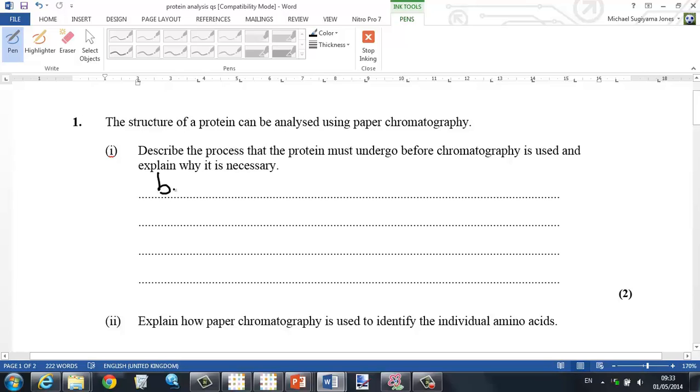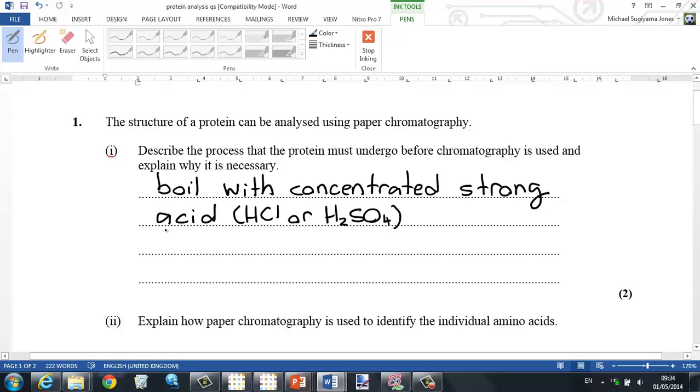The first question is: the structure of protein can be analyzed using paper chromatography, describe the process the protein must undergo. You boil with a concentrated strong acid, HCl or H2SO4, and you want to separate the protein into the amino acids by breaking the peptide bond.